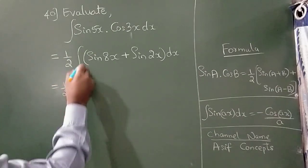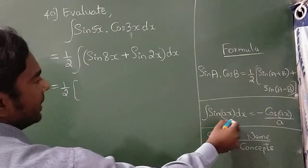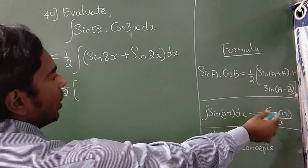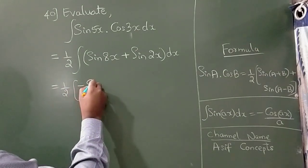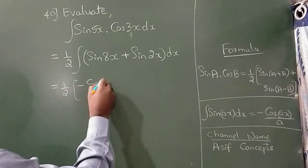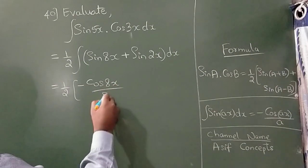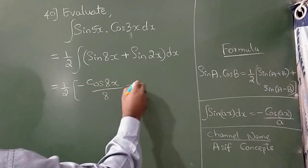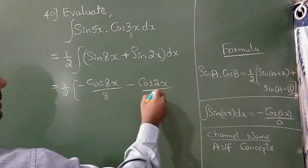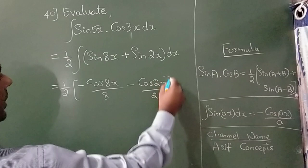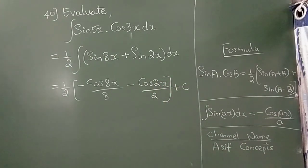The integration of sin(ax) is −cos(ax)/a. So I have to write here: −cos(8x)/8 minus cos(2x)/2 plus C. This completes your answer.